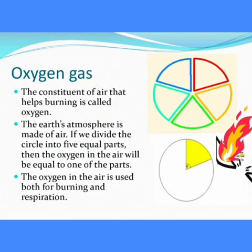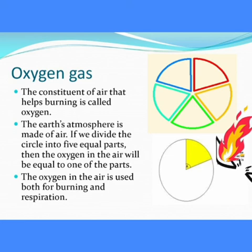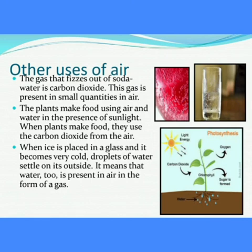The constituent of air that helps burning is called oxygen. The earth's atmosphere is made of air. If we divide the circle into five equal parts, then the oxygen in the air will be equal to one of the parts. The oxygen in the air is used both for burning and respiration.